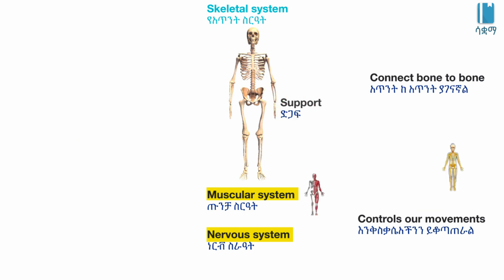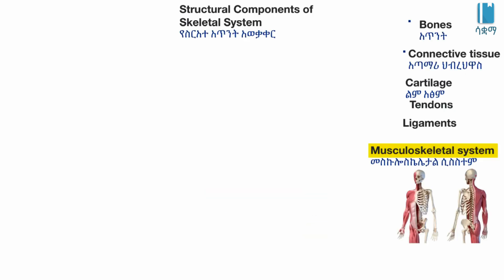Ligaments connect bone to bone. Our nervous system controls our movement. Now we will look at the structural components of the skeletal system.